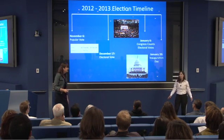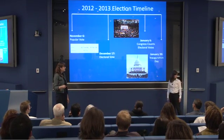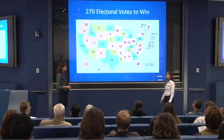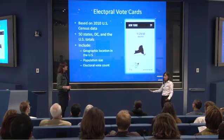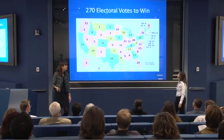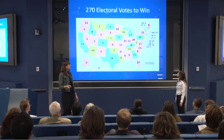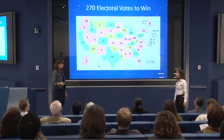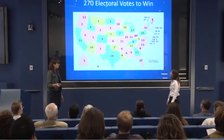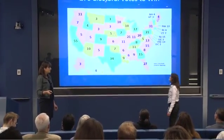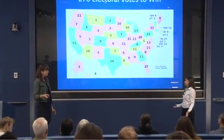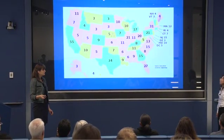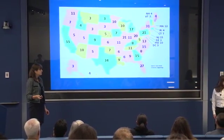I bet you guys didn't know that. And then of course, January 20th is when we actually have our inauguration. So the vote didn't happen until yesterday. In the United States, we have 538 electoral votes. They're allocated by the U.S. Census, which is performed every 10 years. You need 270 to win.